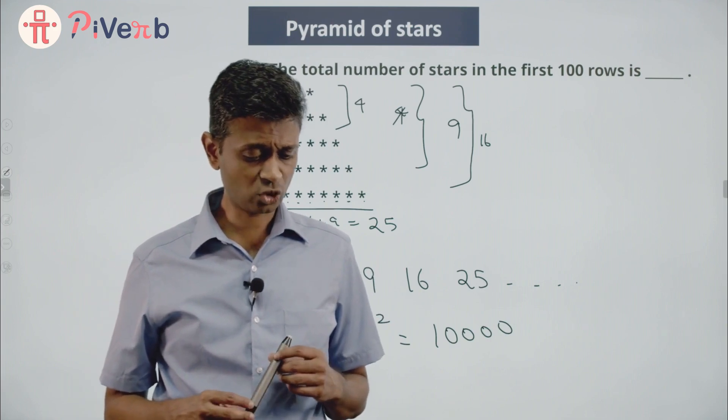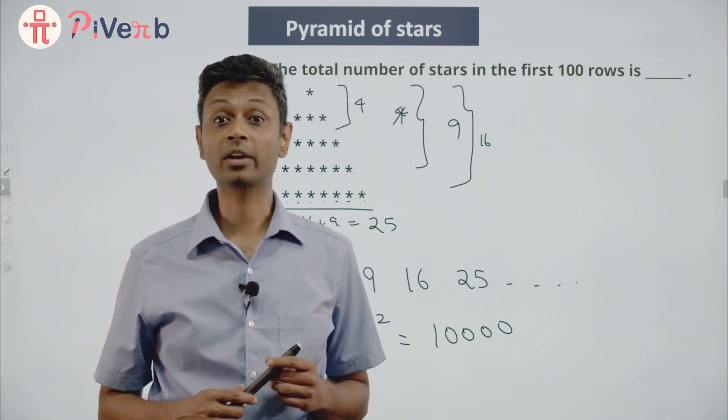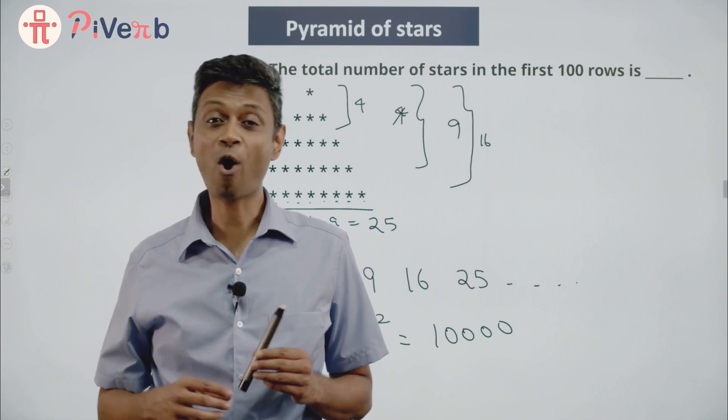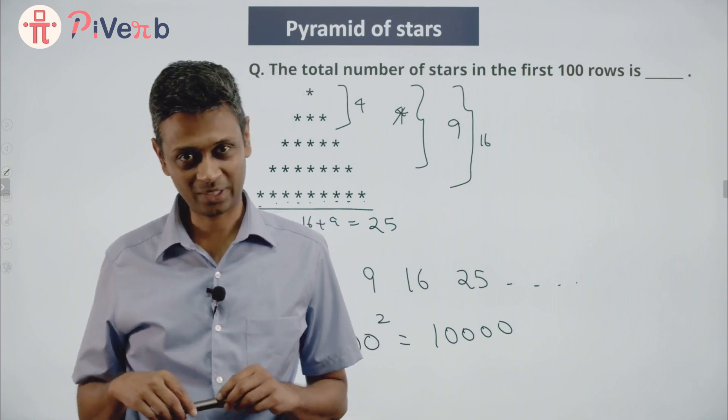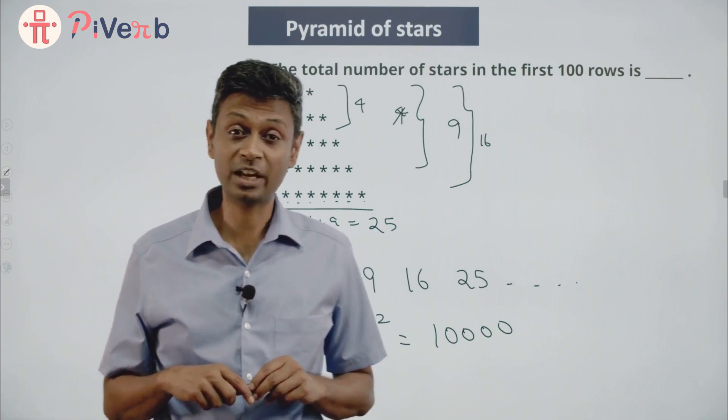Sum of the first n natural numbers is n into n plus 1 by 2. Sum of the first n odd natural numbers is n square.